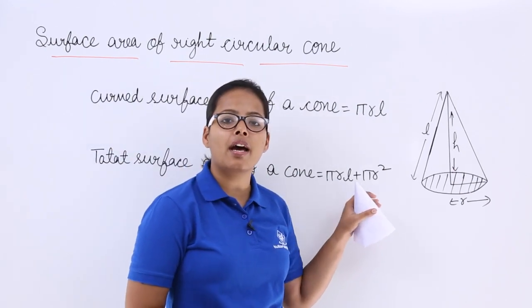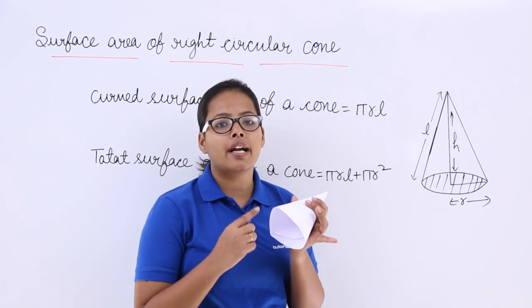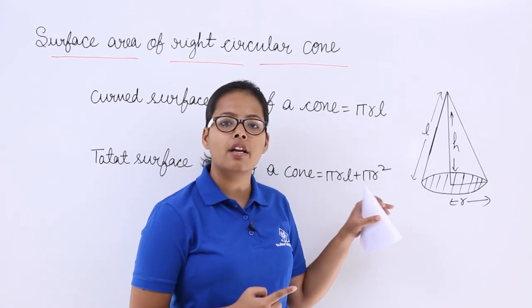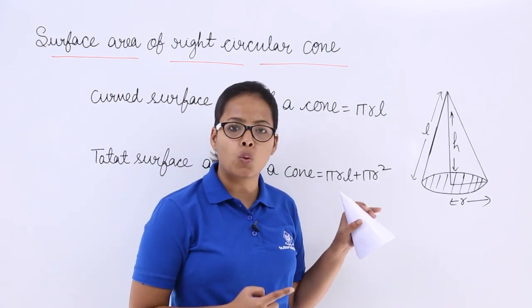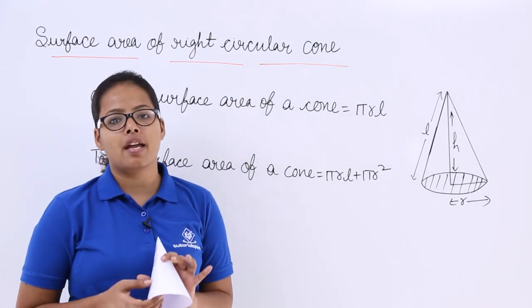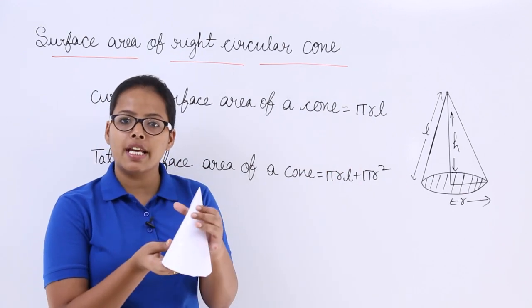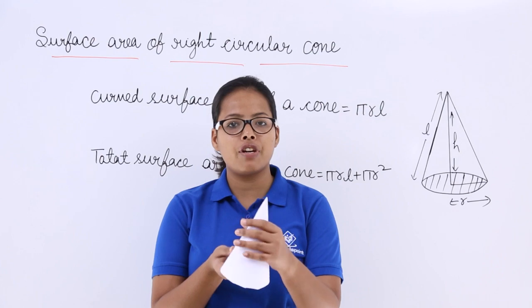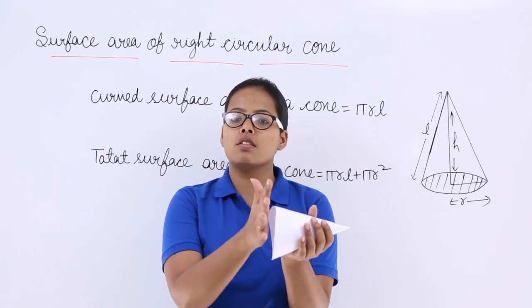So this will have the area πrl plus, now you added another circle here which has area πr² which makes this cone closed. So this total surface area is πrl plus πr², based on curved surface area plus the circle which closes the cone.